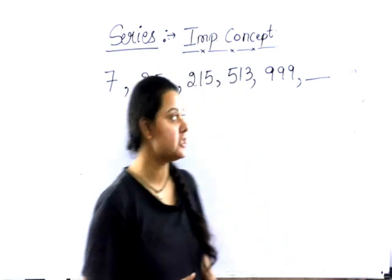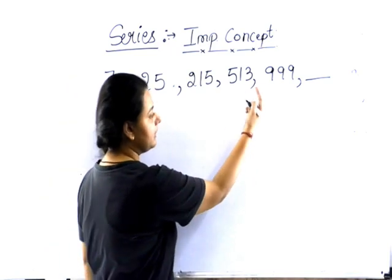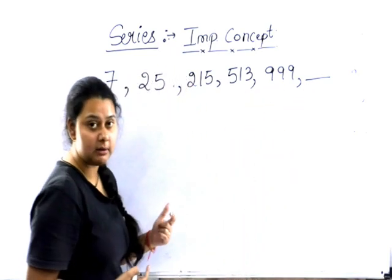So today's question is 7, 25, 215, 513 and 999. What will happen in this question, how will we do this question?